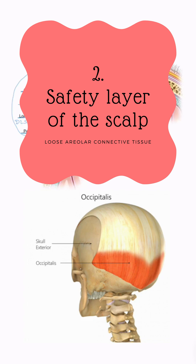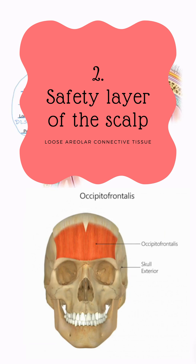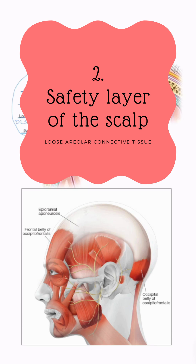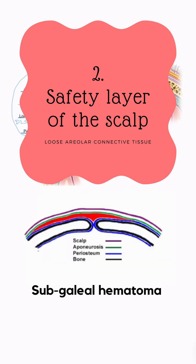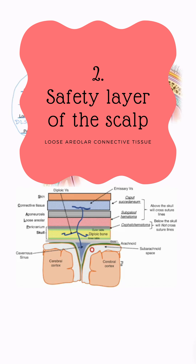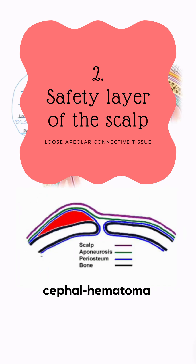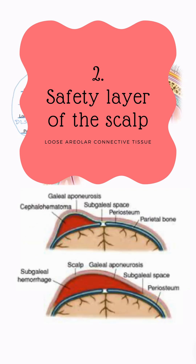Sub-galeal blood can spread back up to the superior nuchal lines where the occipital belly of occipitofrontalis attaches, anteriorly to the root of the nose and eyelids causing black eye, and laterally to the superior temporal lines. Because of this diffuse spread, intracranial pressure does not rise. Unlike a cephalohematoma restricted by sutural ligaments, sub-galeal hematoma spreads freely, thus preventing a rise in intracranial pressure and compression of brain tissue after trauma.